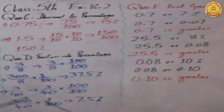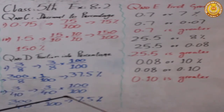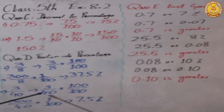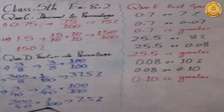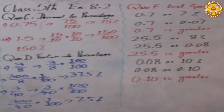The next question is 3 over 40. We multiply by 100 over 100. Dividing 300 by 40 gives us 7.5. So the answer is 7.5%.